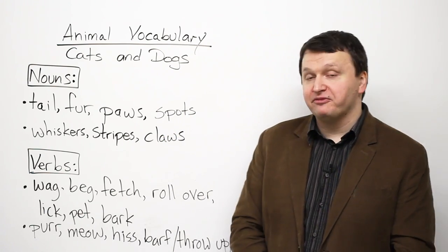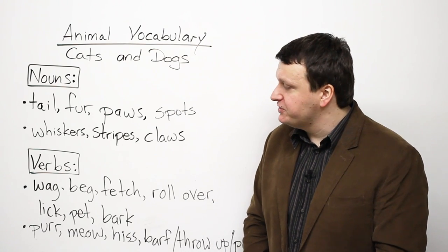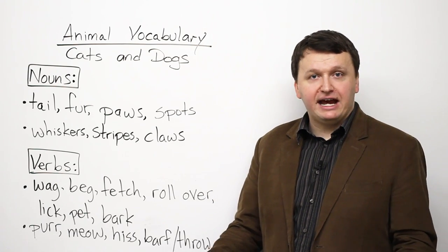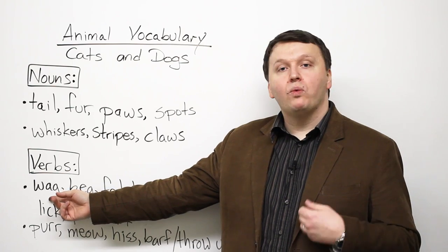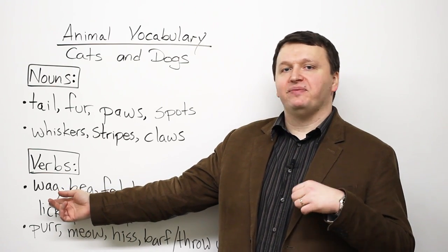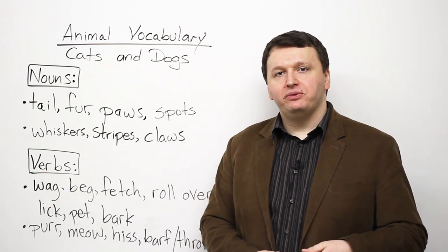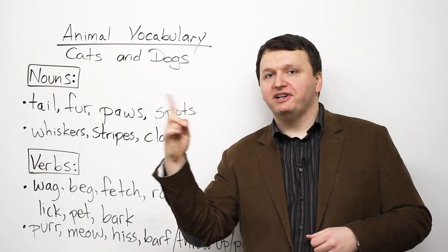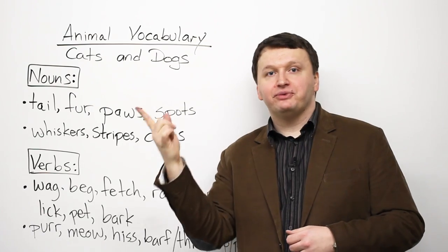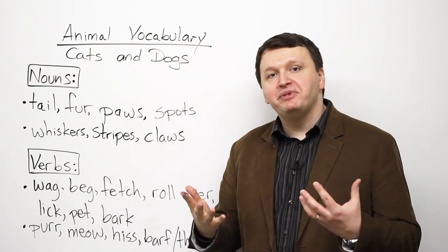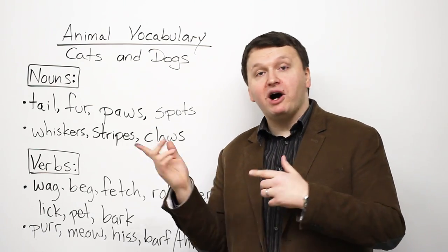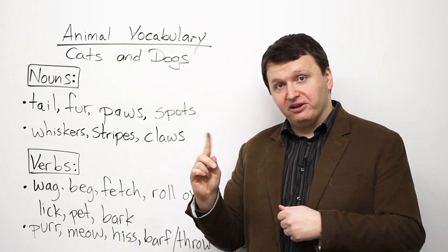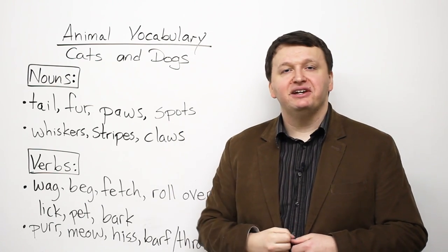Next, let's look at some verbs. These verbs are also associated with cats and dogs. We have wag. So when you think of a dog and the dog's tail is moving back and forth because the dog is happy or the dog wants to go for a walk, the dog's tail is wagging.